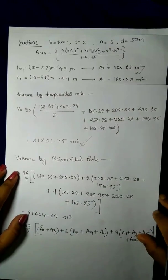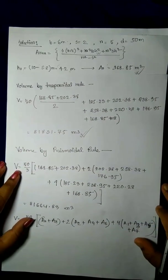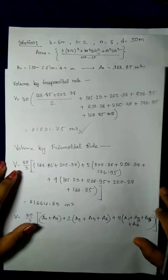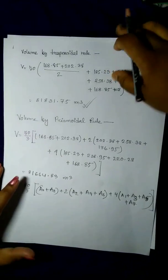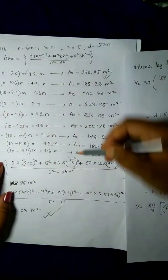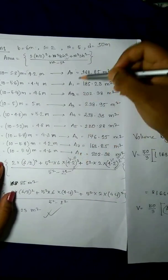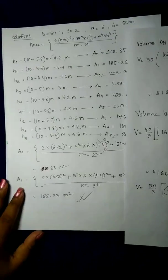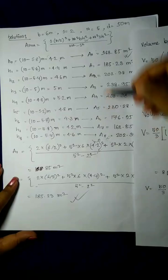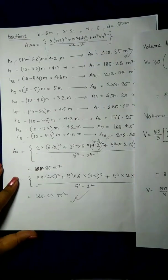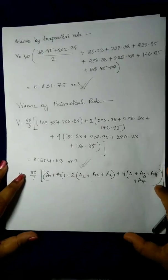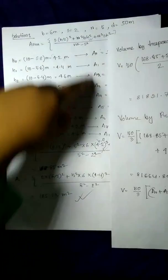If you want to apply the prismoidal rule, it uses Simpson's rule approach. The prismoidal rule can be calculated directly from the cross-sectional areas to get a more accurate volume estimate.